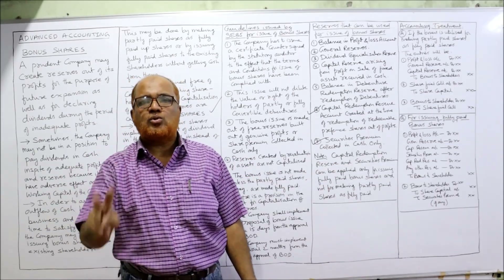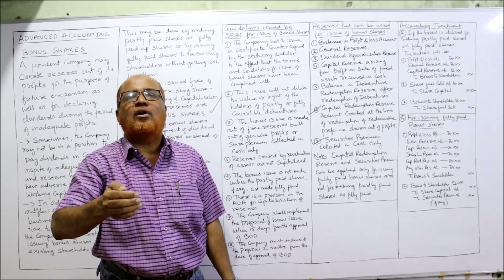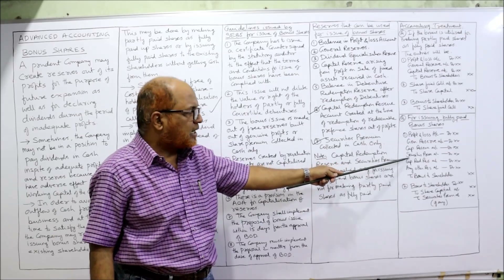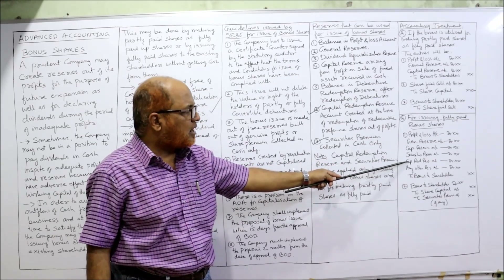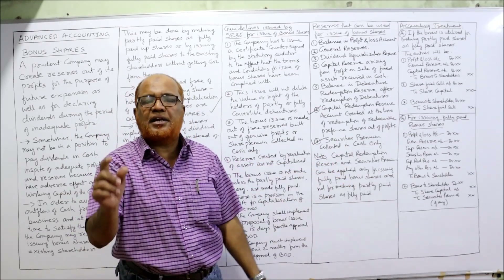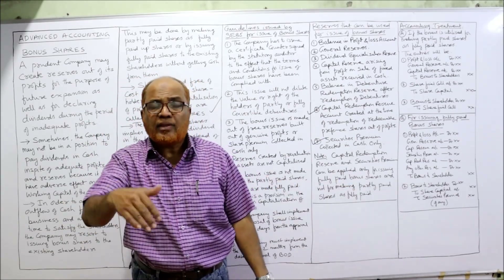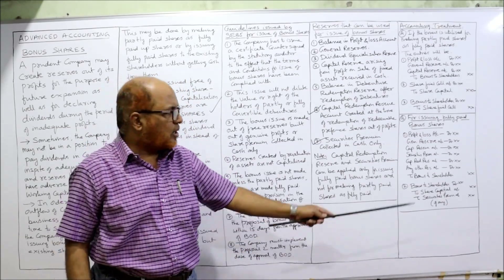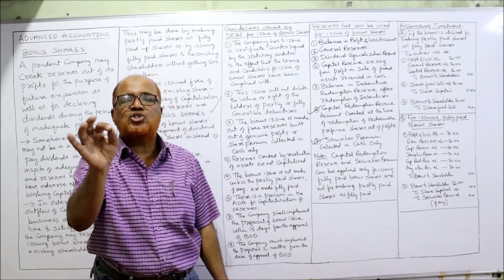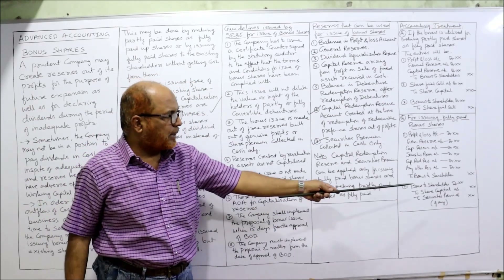When the company issues fully paid bonus shares, only two entries are required. Entry one: debit all reserves being used (e.g., profit and loss account, general reserve, capital reserve, security premium account, capital redemption reserve account, or any other reserve) and credit bonus to shareholders account. Entry two: debit bonus to shareholders account and credit share capital, and credit security premium if any. If bonus shares are issued at premium, then security premium is credited; if at face value, then no premium entry.